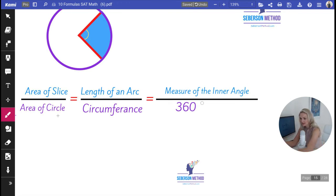So if this is an area of a slice, which is a part, you have to divide by the area of a circle, which makes it whole. If you're taking a length of an arc, which is part of a circumference, you divide it by the circumference.